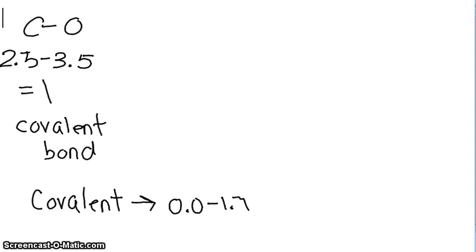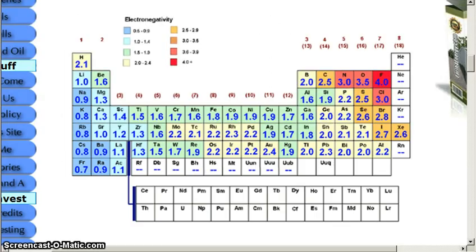Our next example will be the bond between Ca and Br. You go back to your electronegativity chart, and you see that Ca is 1.0, and Br is 2.8.